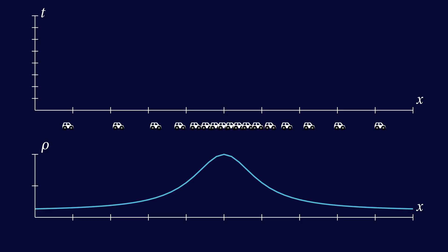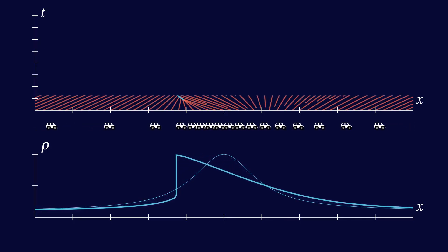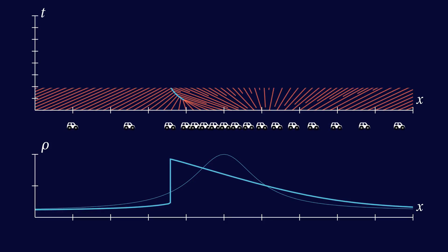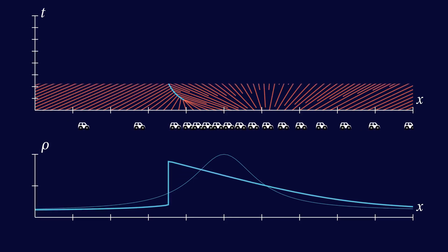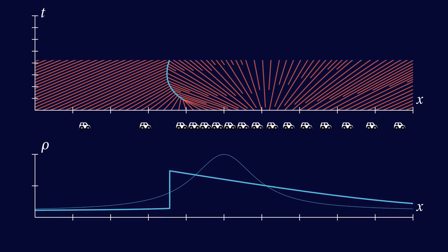First, let's consider a big lump of traffic on an otherwise nearly empty road. We see that a shock forms at the tail end of the queue. Initially, it moves backwards quite quickly, but then it slows down and the size of the jump in density starts to go down as well.